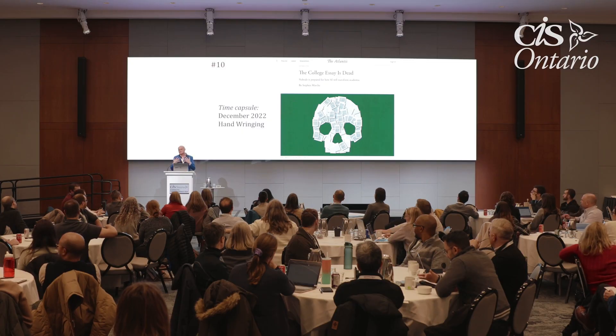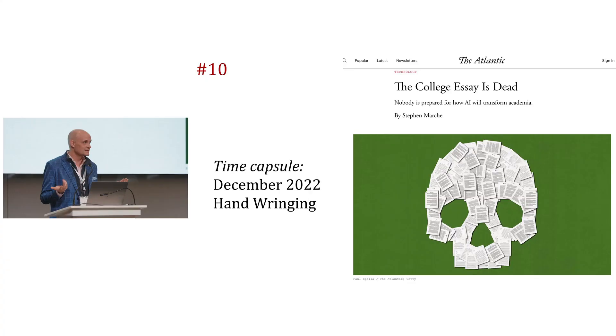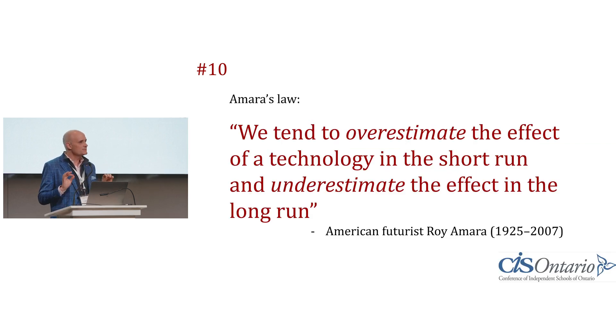When ChatGPT was released on November 30th, 2022 — it had existed for years in different ways in labs — immediately within two months there were essays hand-wringing that this is the end of schooling as we know it and plagiarism would be rampant. But the data suggests plagiarism isn't quite to the extent we were worried, and the college essay is still going. Is the essay dead? Maybe, kind of — but the hand-wringing immediately suggested there's a lot of overestimation. I want this to be a framing reference for how we think in the short term, but also the long term.